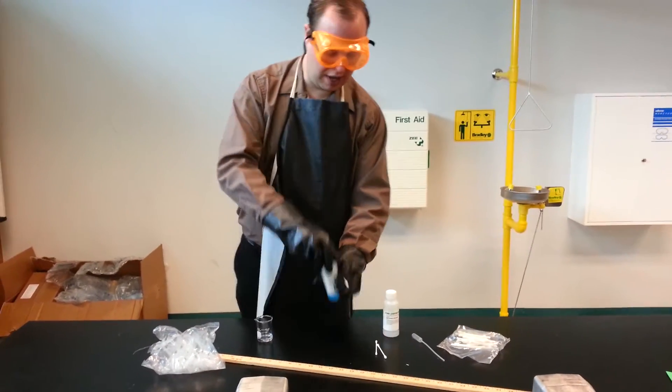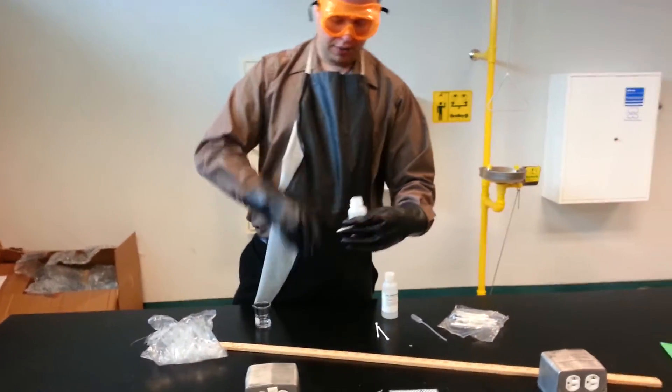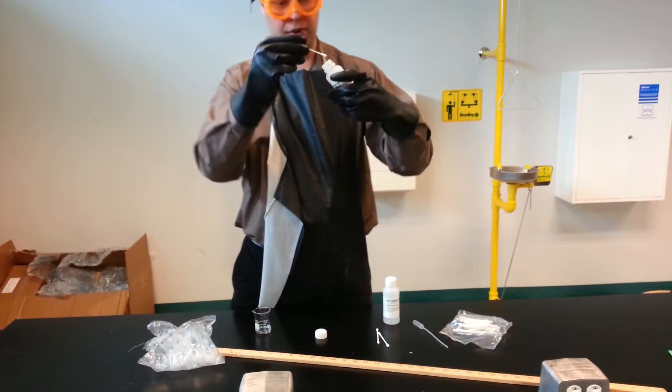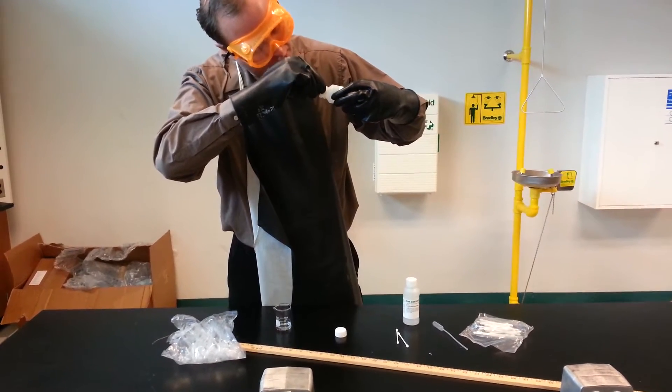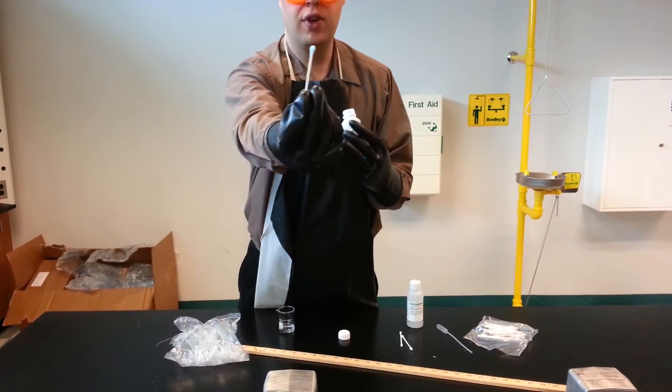What we're going to do first, we'll do the copper nitrate. I'm just going to take this Q-tip, touch the copper nitrate so the Q-tip has a little bit of solution in it. You can see it's blue right now.